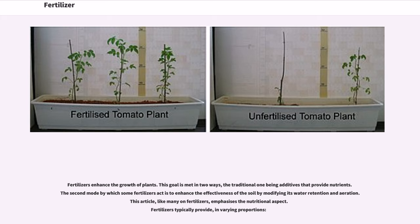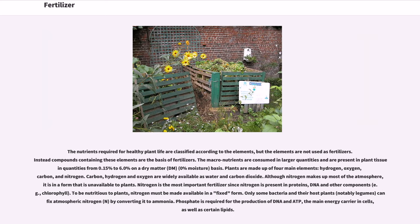This article, like many on fertilizers, emphasizes the nutritional aspect. The nutrients required for healthy plant life are classified according to the elements, but the elements are not used as fertilizers — instead, compounds containing these elements are the basis of fertilizers. The macronutrients are consumed in larger quantities and are present in plant tissue in quantities from 0.15% to 6.0% on a dry matter (DM, 0% moisture) basis.